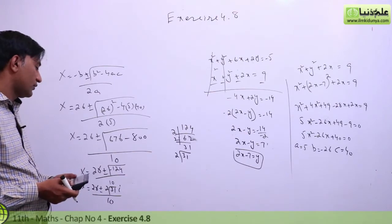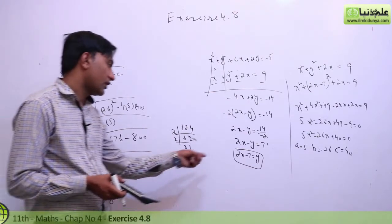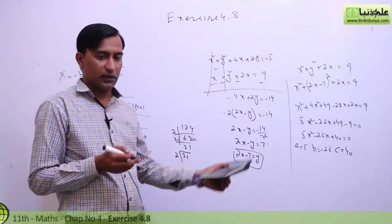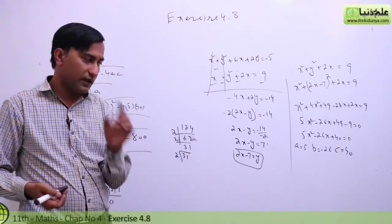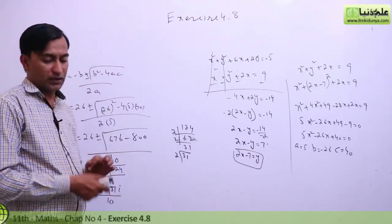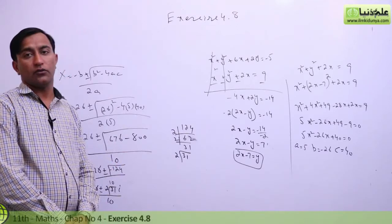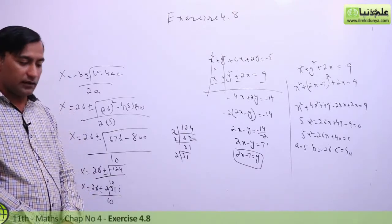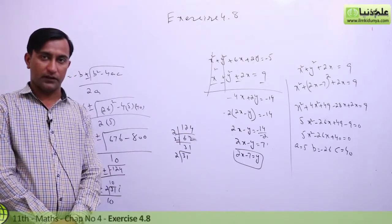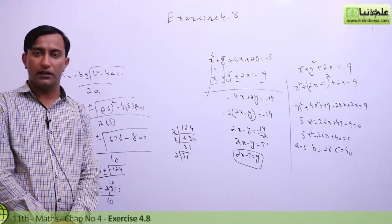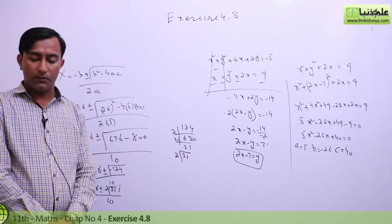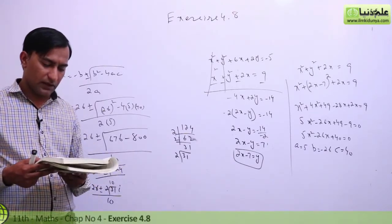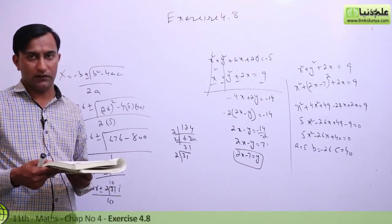If we take plus: x equal to 26 plus 2 root 31 over 10. If we take minus: x equal to 26 minus 2 root 31 over 10. So we have two x values and two y values, giving two pairs. For a quadratic equation we get two pairs, for a linear equation one pair, and for a fourth-degree equation four pairs. Same applies to question number 9 and 10.